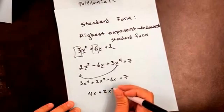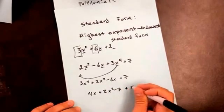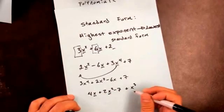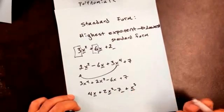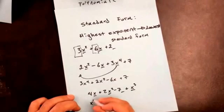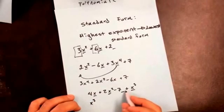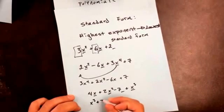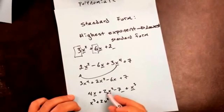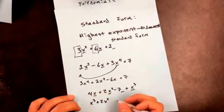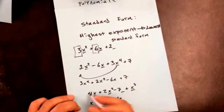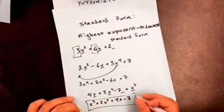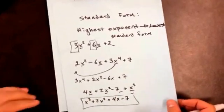This is the last example of getting it in standard form. I have exponents of 1, 2, 3, and then a constant. The 3 has to come first — you want to keep the sign that's in front of it too. This is positive. x squared comes second — positive. x comes next — positive. And the constant comes last. That's all you're trying to do when you're getting it in standard form.